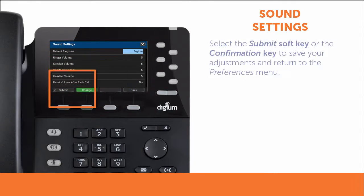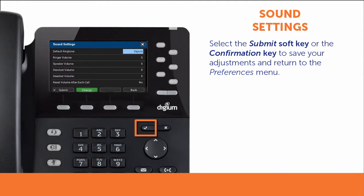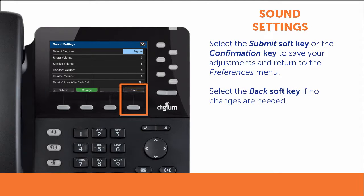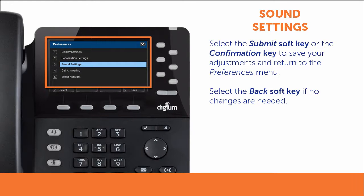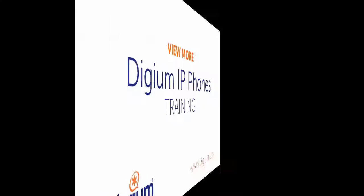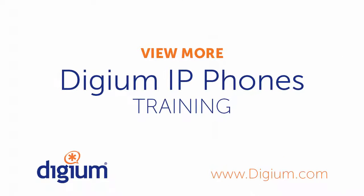Select the Submit soft key or the confirmation key on the phone to save your adjustments and return to the Preferences menu. If no changes are needed, select the Back soft key to return to the Preferences menu. Thank you for watching the Digium IP Phone Training Series How to Set Your Preferences video.